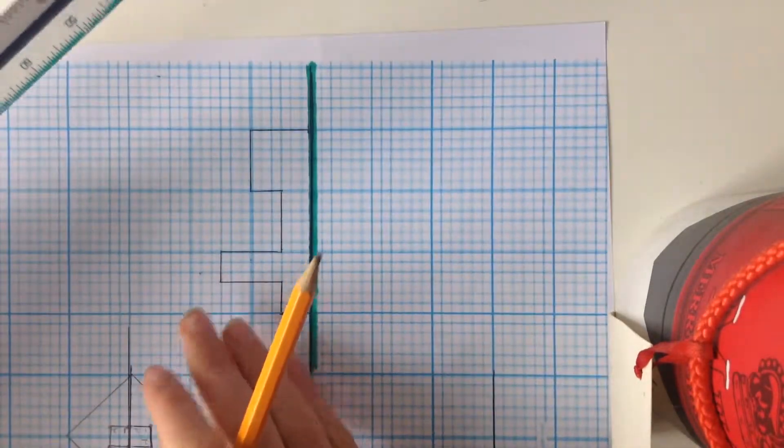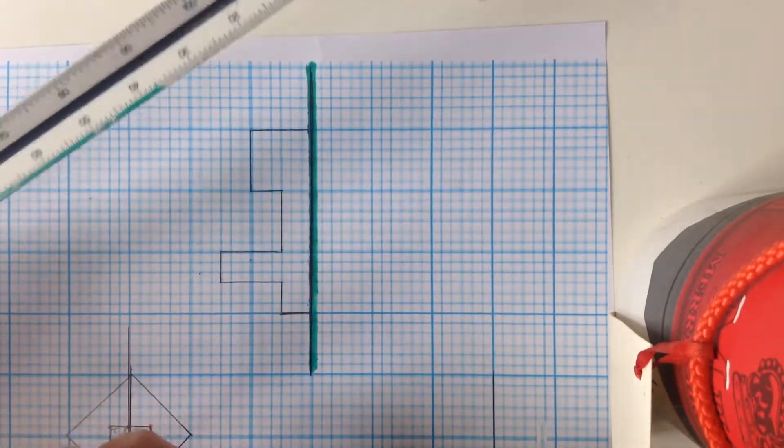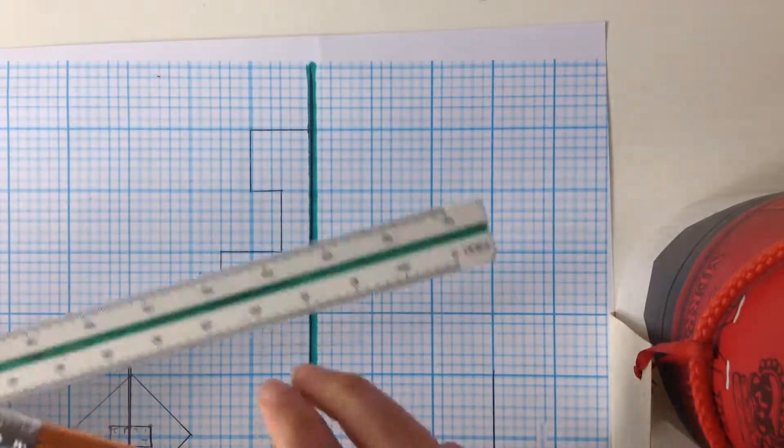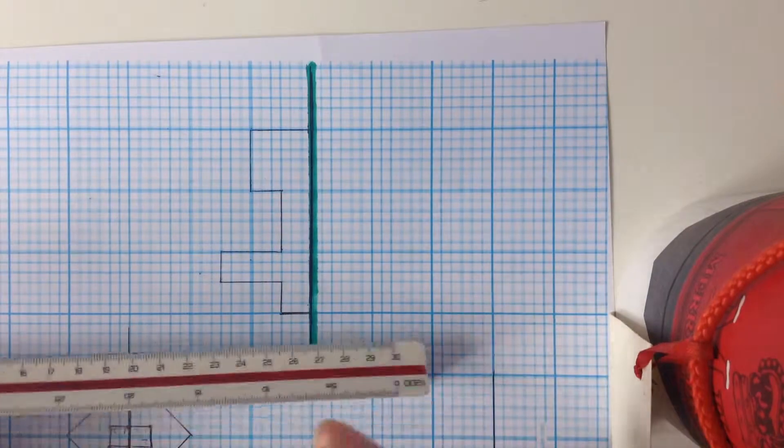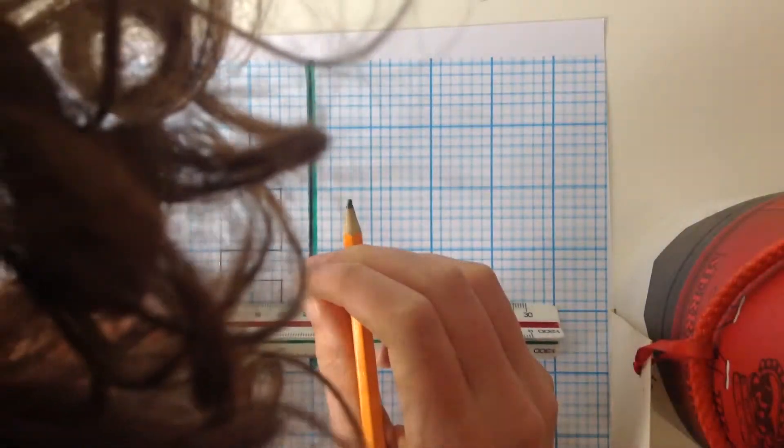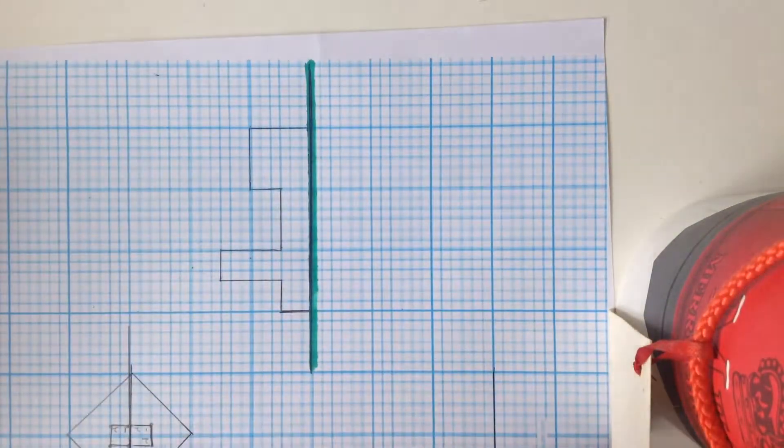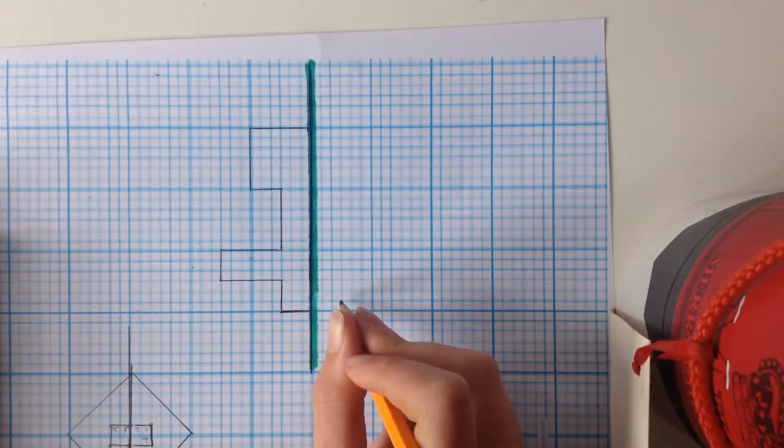Or, you can just use a ruler. So, you can measure how many millimeters or centimeters it is for one thing. So, for example, here, it is about a centimeter, and then you just do a centimeter out on this side.